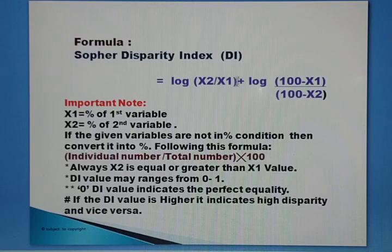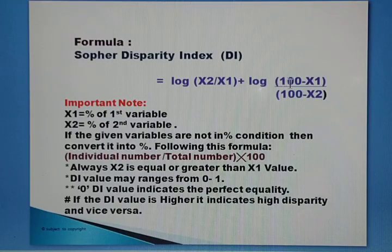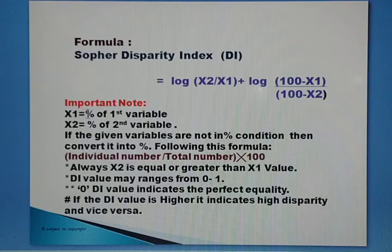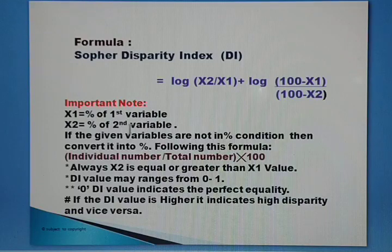The Sopher's Disparity Index formula is: log(x2 / x1) + log((100 − x1) / (100 − x2)). Here x1 represents the percentage of the first variable, whereas x2 represents the percentage of the second variable.